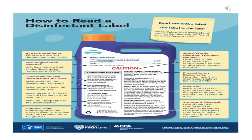It is really important to know how to read the label attached to the disinfectant bottle or product. This slide provides a guide on how to read all the required information on the label attached to the disinfectant, such as the active ingredients, the EPA registration number, the directions for use — also called manufacturer's instructions for use — the signal word such as caution required when using the disinfectant or exposed to chemicals, the precautionary statement, first aid required, and the method for storage and disposal.